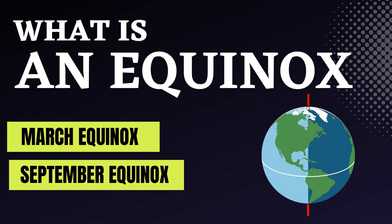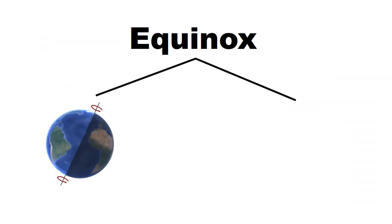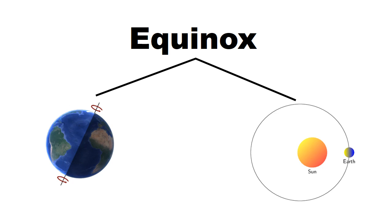We will understand two equinoxes: one is the March equinox and the second is the September equinox. An equinox is a result of two things — Earth's tilt and its orbit around the sun.